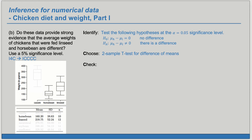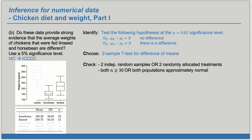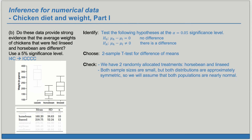Now let's check whether the conditions for this test are met. We need two independent random samples or two randomly allocated treatments. Here we do have two randomly allocated treatments — horse bean and linseed feed. We should have both sample sizes at least 30, or both populations approximately normal. Here both sample sizes are quite small, but looking at the data, both distributions are approximately symmetric, so it's reasonable to assume both populations are nearly normal.